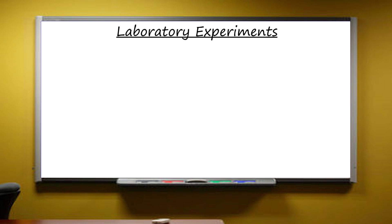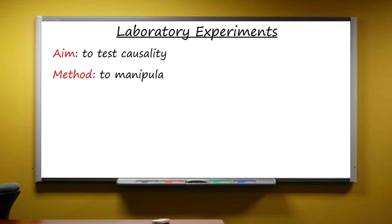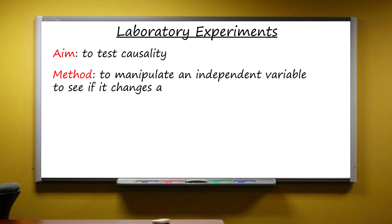The aim of experiments is to go beyond description and test causality. The method is to manipulate something called an independent variable to see if it brings about change in something else called a dependent variable.